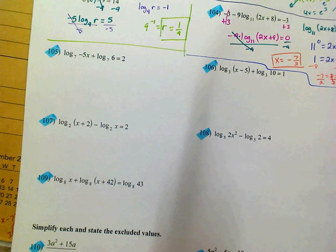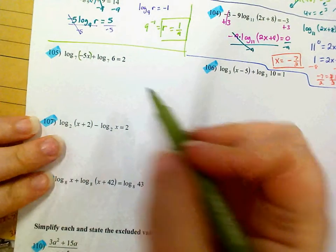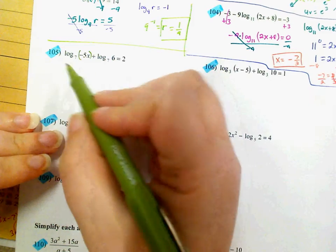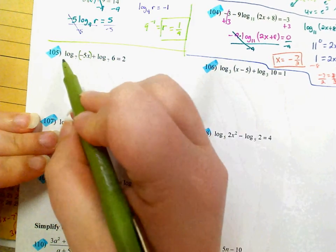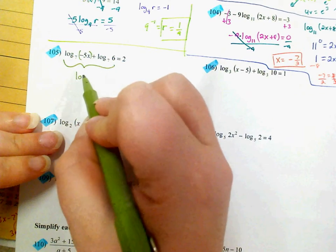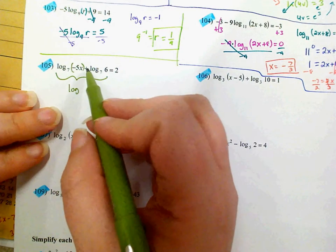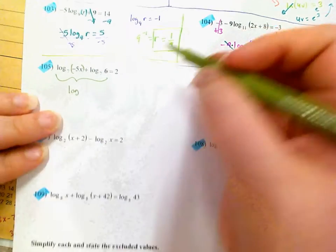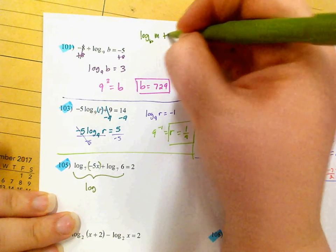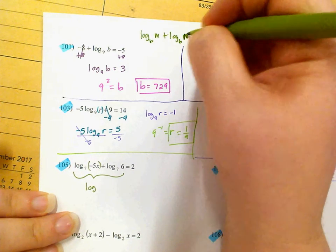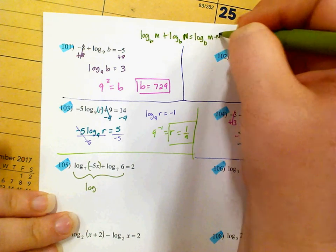When I have two logarithms separated by addition, I don't have log equal to another log, so it's not like I can cancel out the logs. What I can do is combine them into a single log, so that I've got a situation where I can just convert to an exponential. As a reminder: log base B of M plus log base B of N is the same thing as log base B of M times N — we combine them using multiplication.